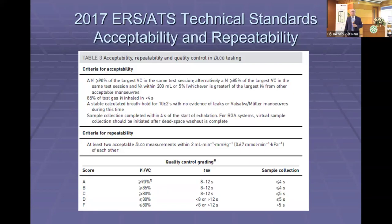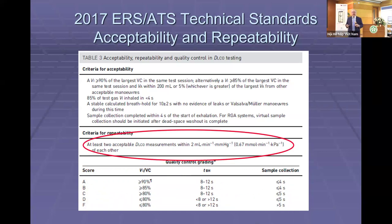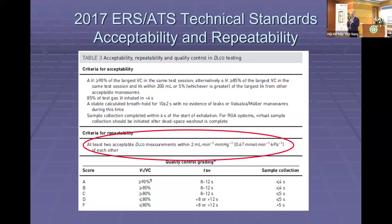There is an acceptability criteria, which includes taking that deep breath to 90% of predicted vital capacity. There's also a repeatability criteria: at least 2 maneuvers must be repeatable within 2 units of one another using millimeters of mercury. In parts of the world using SI units — kilopascals — that repeatability is less than 1 unit (0.67 kPa).